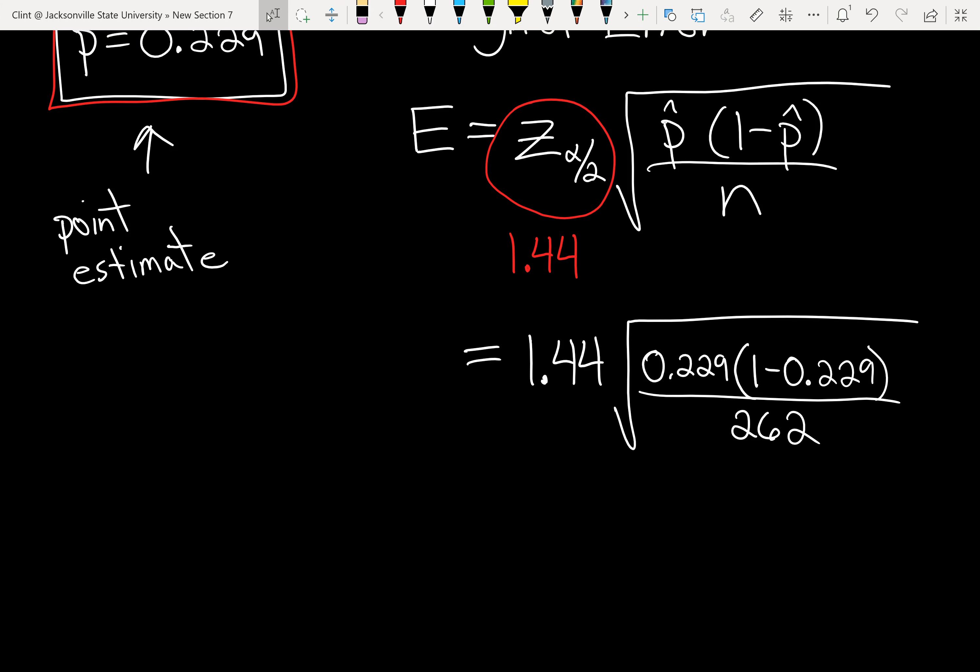But then we need to do times 1.44. So if we do that, end up with 0.03738 and then eight rounds to two. So this is my margin of error.